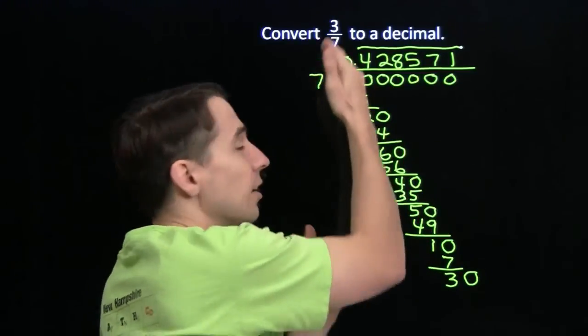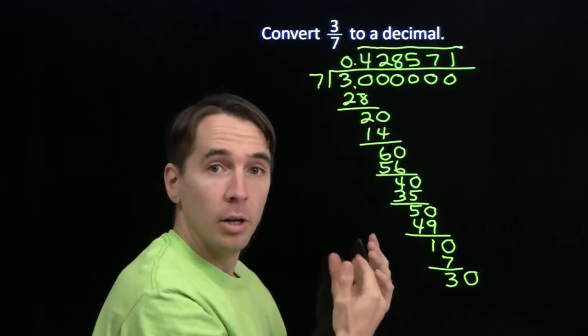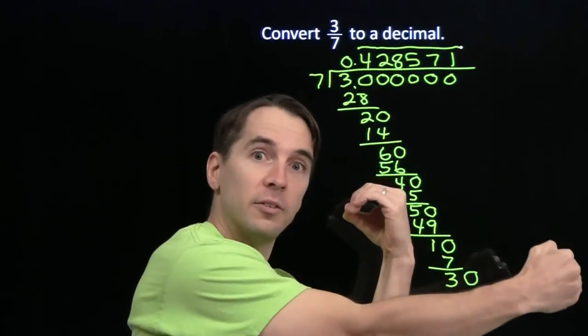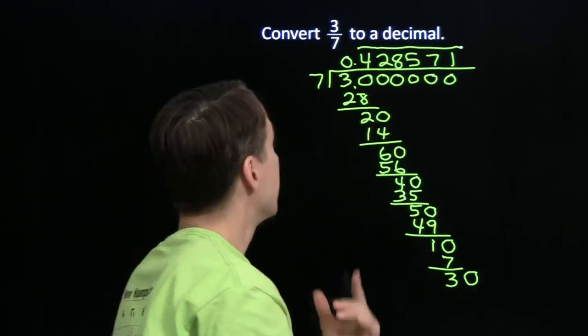And just what we did here with 7, dividing 7 into 3, we can do that with any denominator. Divide the denominator into the numerator. If we hit a 0 while we're doing that division, then we terminate. The decimal terminates.